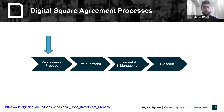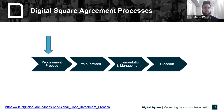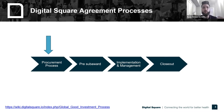This is our full agreement process. It begins in the procurement process, which is part of what we'll be going over today. That's where we release notices or RFAs — requests for applications — identifying funding. Applicants submit applications and we go through a selection process. From there we move into a pre-sub-award phase, then into implementation and management of the actual agreement, and finally close out. Today we're really focusing on this procurement process, specifically grants, as that is the main way Digital Square provides funding and sub-awards.